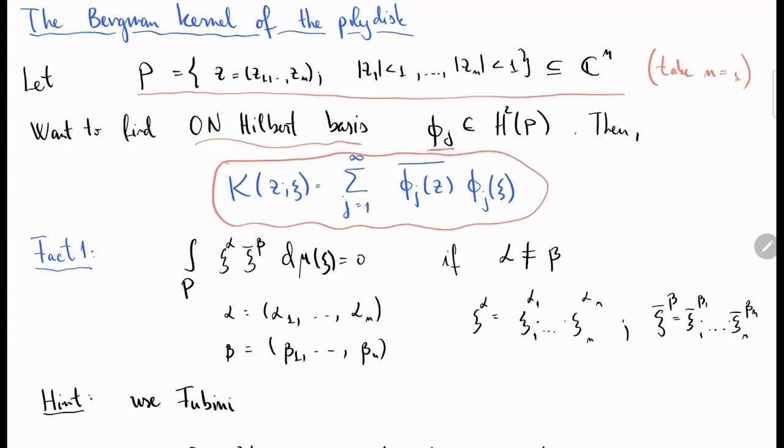Let's consider poly powers or multi powers. If xi is a vector xi 1 all the way to xi n, then xi to the alpha where alpha is a multi power is nothing but xi 1 to the alpha 1 times xi 2 to the alpha 2 times xi n to the alpha n. And the same thing for xi conjugate, which is just conjugation component wise raised to the beta multi power.